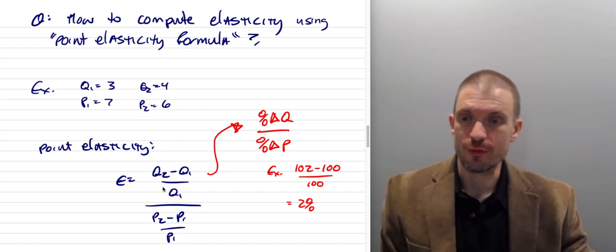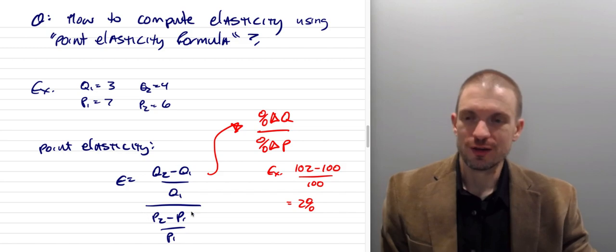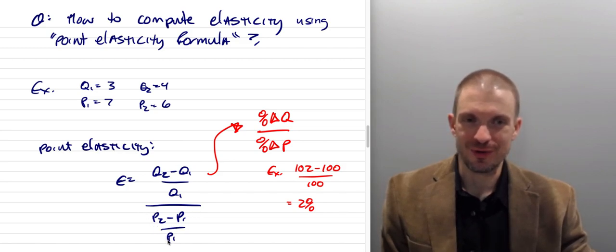Okay, so the point elasticity formula is going to be Q2 minus Q1 divided by Q1, whole thing divided by P2 minus P1 divided by P1. Sometimes you think of like new quantity minus old quantity divided by old quantity and new price minus old price divided by old price.